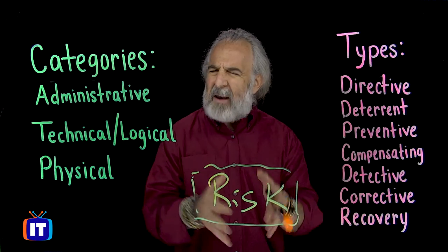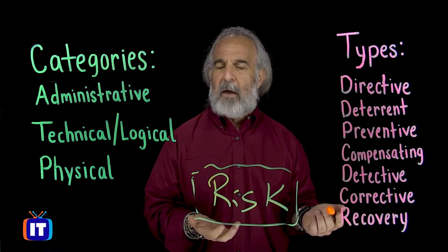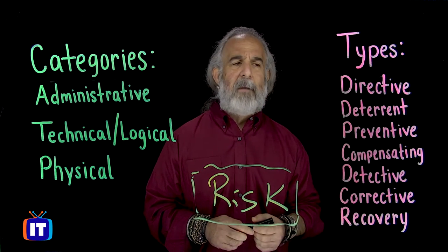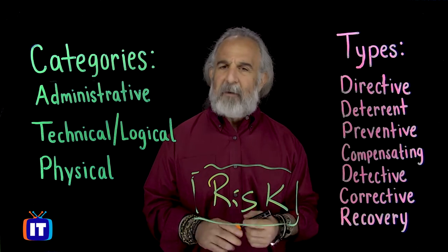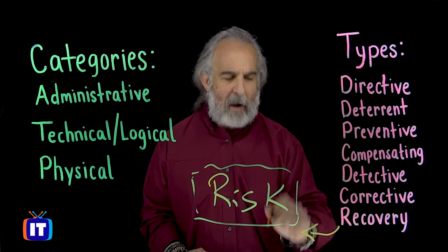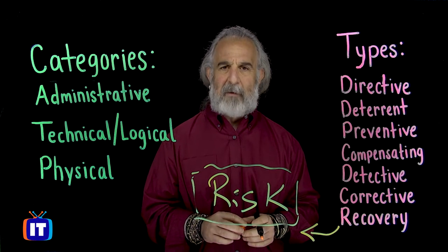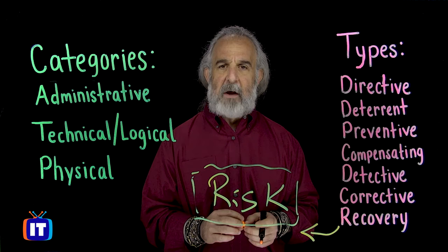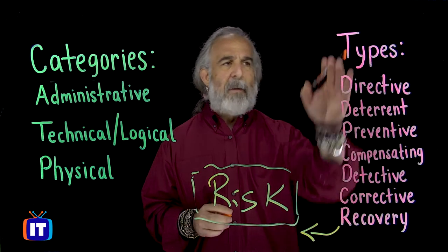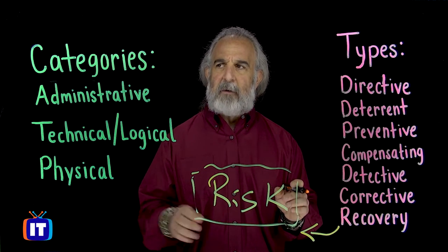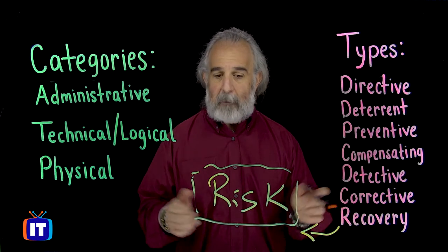When we think about categories, we think very broadly about groupings of controls based on approach or functionality. As we get more granular and tactical, we turn our attention to types. There are seven of them, and they allow us to make specific choices to impact and minimize risk, pushing it down as far as possible. Categories are very broad; types are very specific — that's the key takeaway from the first question.